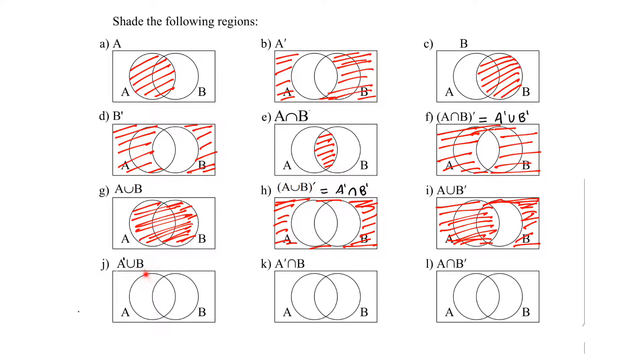Not A union B means everything except the only A part. This part which is not a part of B. This is the only A part. So we will be shading everything except that part. Here we are done shading it.